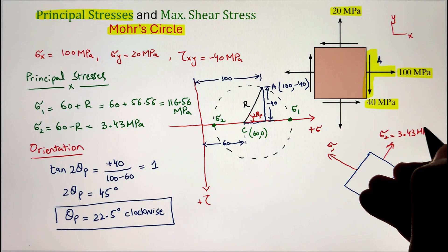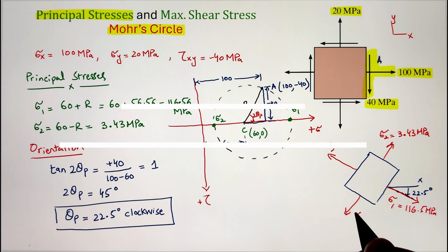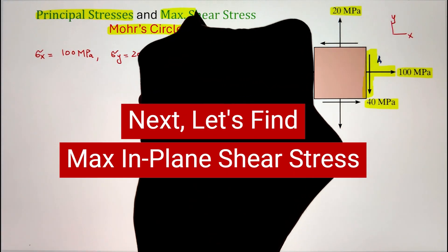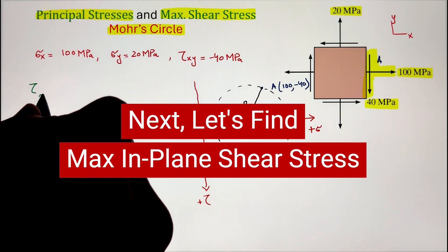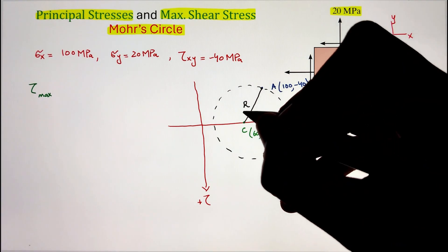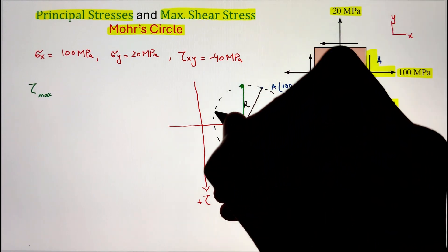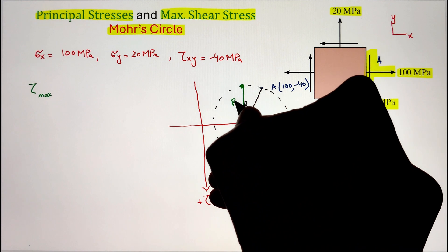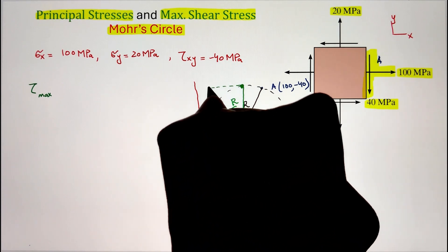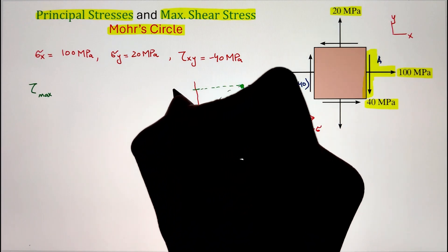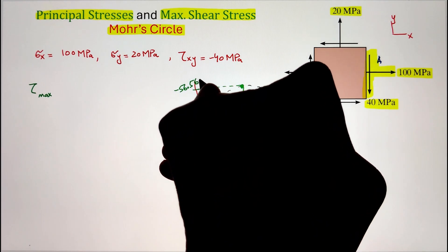Once we have developed our stress element for the principal stresses, let's look into maximum shear stresses and how to get that value from the circle. Since the vertical axis represents shear stress, the furthest point from the horizontal axis is determined by the radius of the circle. So the value of tau max is negative R, that is minus 56.56 megapascal.